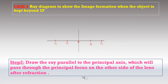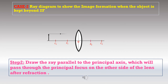Case 2: Image formation when the object is kept beyond 2F, that is beyond C1. Draw the lens, mark C1, C2, F1, F2, and draw the object with an arrow mark. Step 2: Draw one ray parallel to the principal axis starting from the top of the object. After refraction, this ray passes through the principal focus on the other side of the lens.